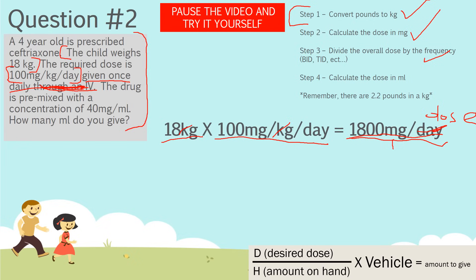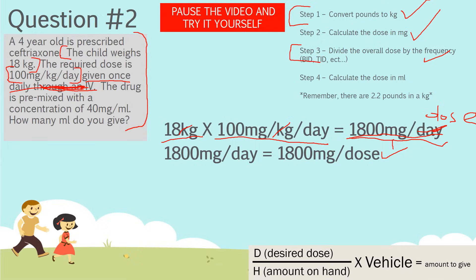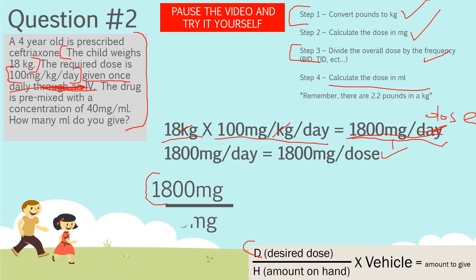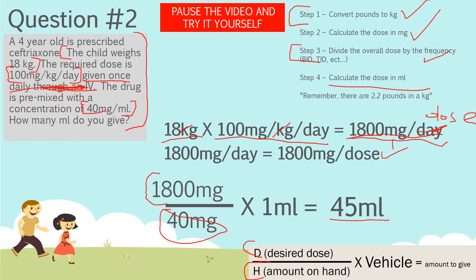Step four: calculate the dose in milliliters, just as you would for an adult. The desired dose is 1,800 milligrams. The on-hand concentration is 40 milligrams per milliliter, so 40 milligrams goes in the denominator. We multiply by 1 milliliter. Solving this equation gives a final answer of 45 milliliters.